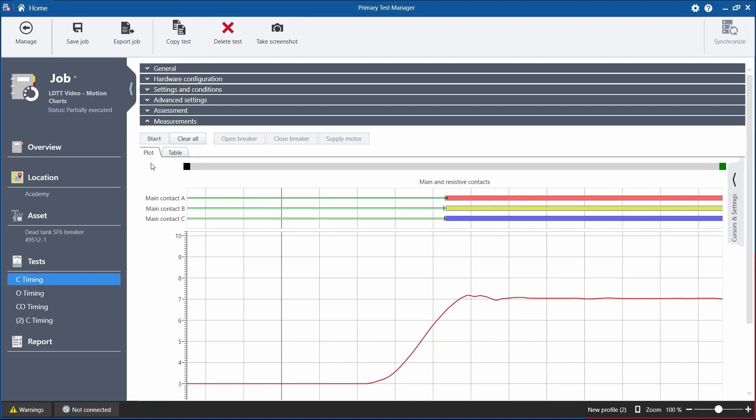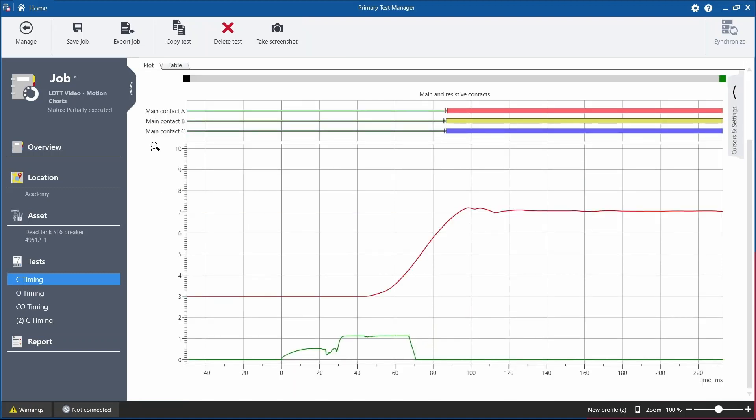With our measurement completed, we can open up in the PTM and go to the plot section here. And here at the top, we can find the status of our main contacts starting in the open position, indicated by the thin green line, and then into the closed position with the red, yellow, and blue solid lines for each respective phase.